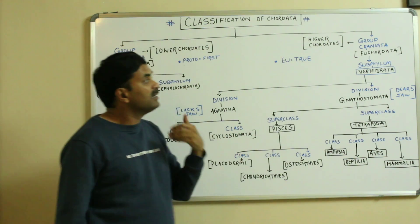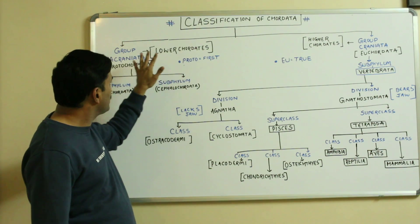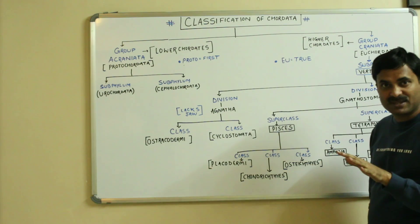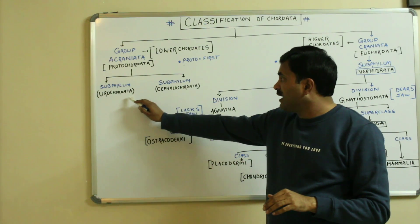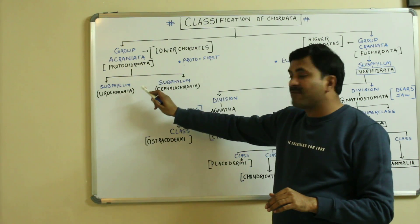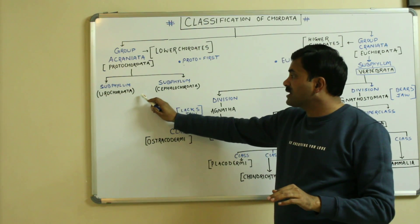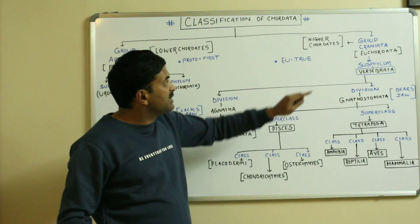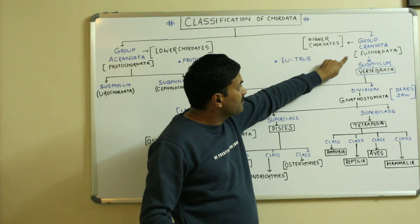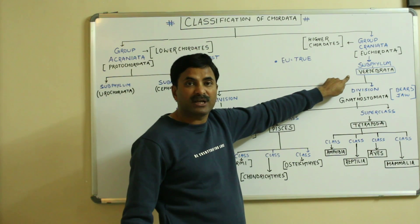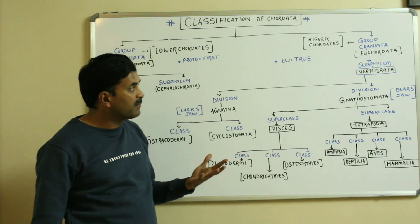The group Acraniata has been classified into two subphyla: one is known as Urochordata and another is known as Cephalochordata. The group Craniata is divided into only one subphylum, which is known as Vertebrata. Vertebrates are organisms which have the vertebral column, and it is the most important subphylum of the Chordata.